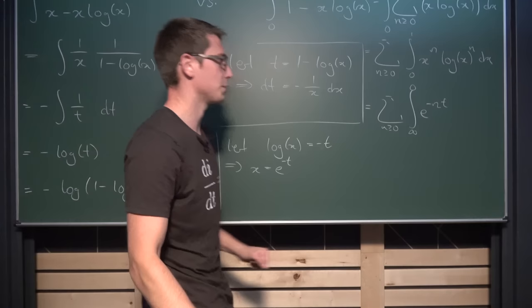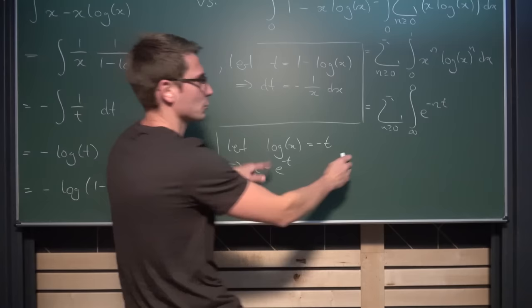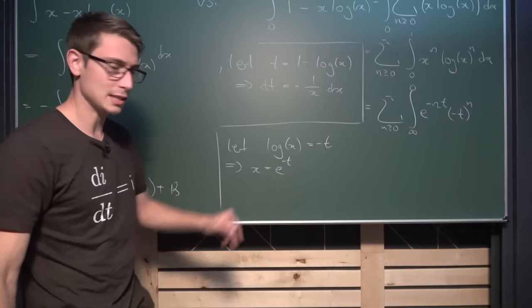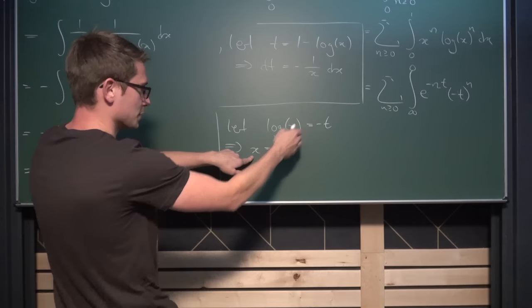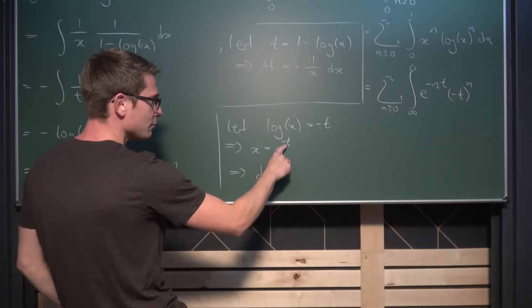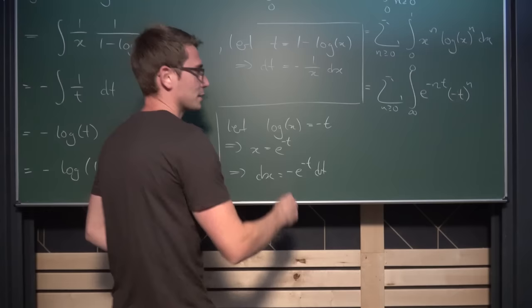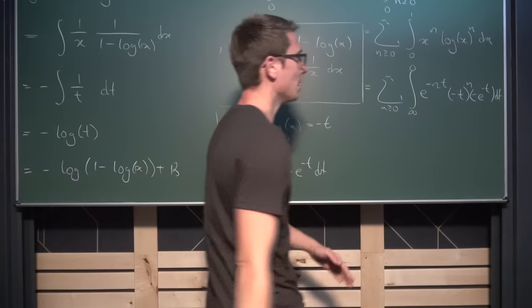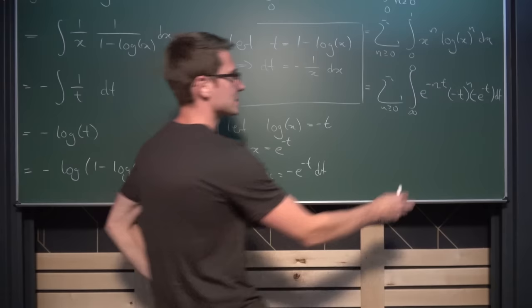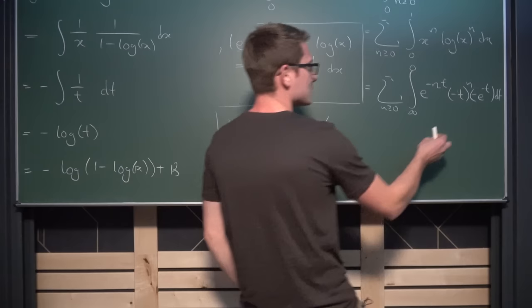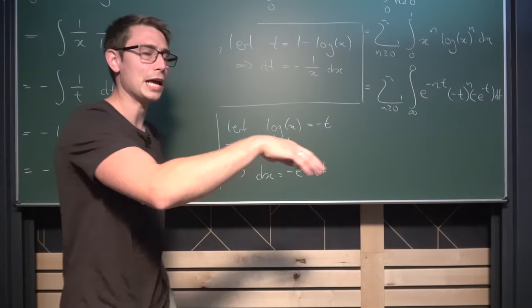We still need to implicitly differentiate, giving us dx equal to negative e to the negative t dt. We can plug this in: negative e to the negative t dt. Now negative t to the nth power is nothing other than negative 1 to the nth power times t to the nth power. Bringing the negative 1 to the front gives us negative 1 to the nth power overall.